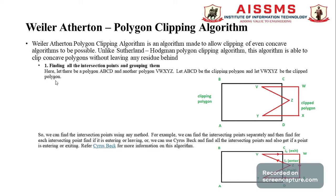Unlike the Sutherland-Hodgman polygon clipping algorithm, the Weiler-Atherton algorithm is able to clip concave polygons without leaving any residue behind. It is used for clipping hidden areas, and allows clipping of even concave polygons.